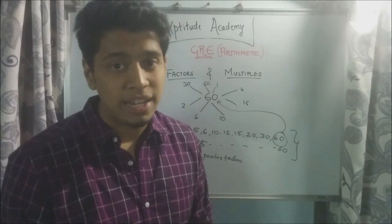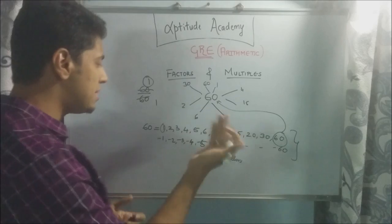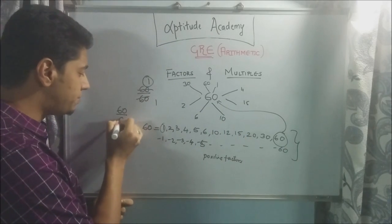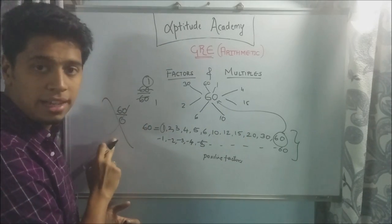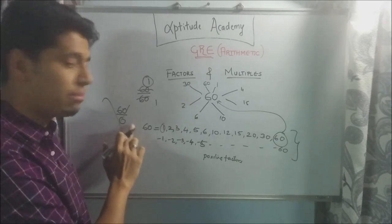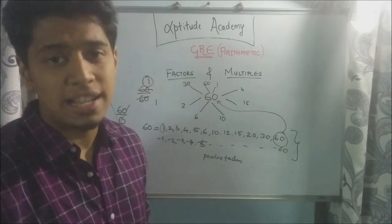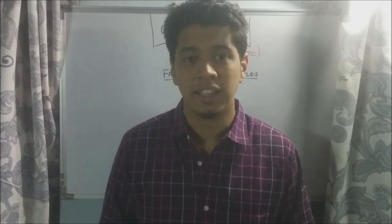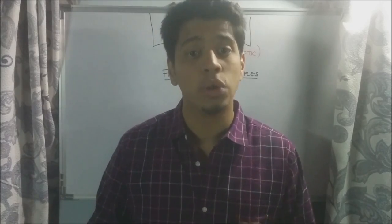Note, 0 is never considered a factor because if you do the simple test, 60 by 0, this violates a law in maths. You cannot divide anything by 0. So 0 is never considered a factor. 0 is not considered a factor of any integer except for 0. But 1 is considered a factor for everything because anything divided by 1 is itself. So 1 is considered a factor for everything and 0 is considered a factor only for 0.